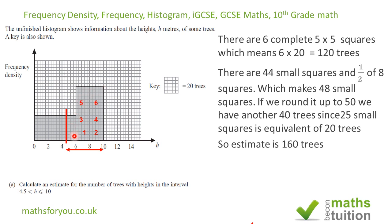In addition, we've got these little squares here and this one here, that's 44. And then we've got half times 8 there because we've got 8 squares there and we're taking half of that. That gives us 4, so if we add 4 to 44 we have 48 trees. Now 48 is not 50 little squares, and we know that 25 squares give us 20 trees, so 50 squares will give us 40 trees.